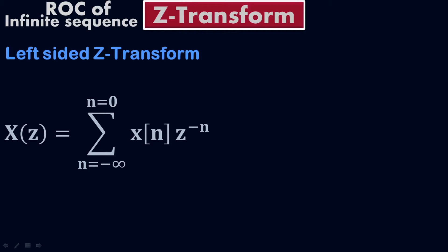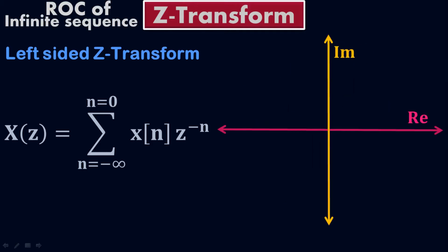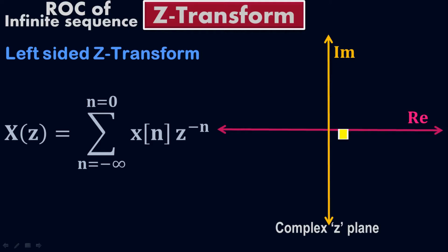Let me show you graphically in the real and imaginary plane. This is the complex z-plane with a real axis and an imaginary axis. 'Re' means real, and 'Im' means imaginary.